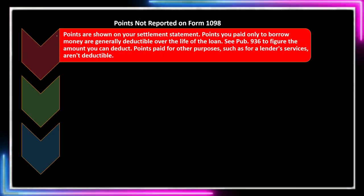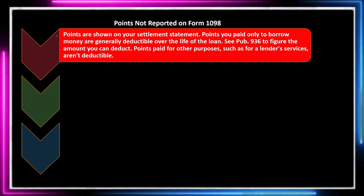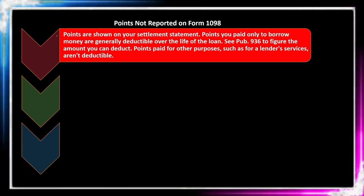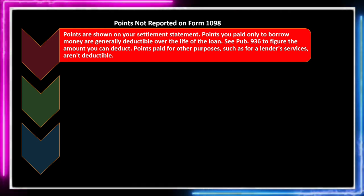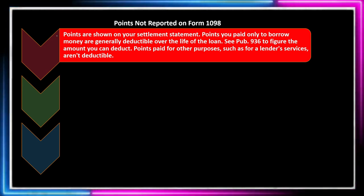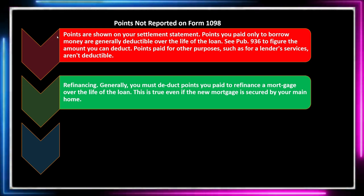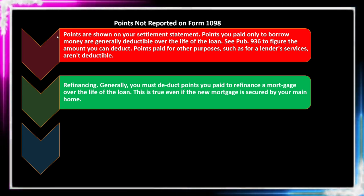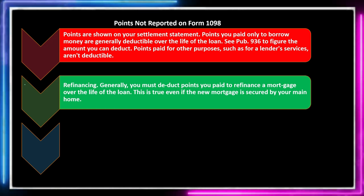Points are shown on your settlement statement. Points you paid only to borrow money are generally deductible over the life of the loan — see Publication 936 to figure the amount you can deduct. Points for purposes such as lender services aren't deductible, so if points are categorized for something other than interest or prepaid interest, you don't get a deduction. The exception is the capacity to deduct interest used to purchase something on the personal side.